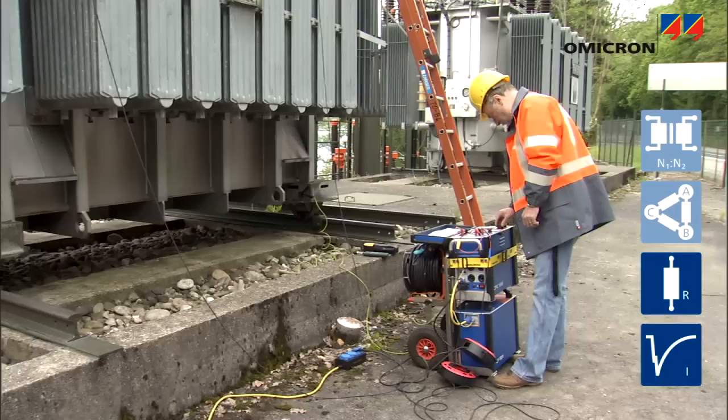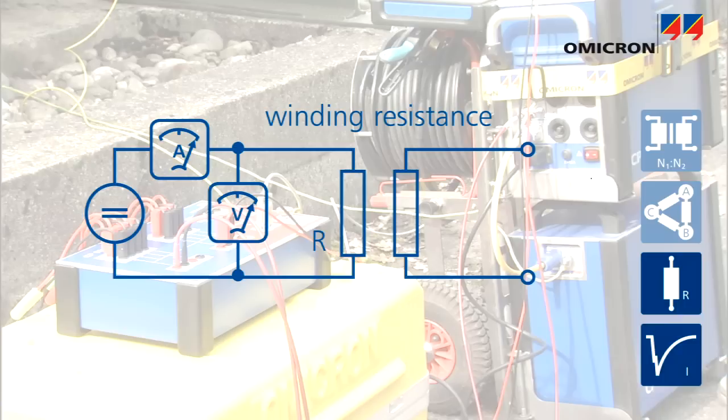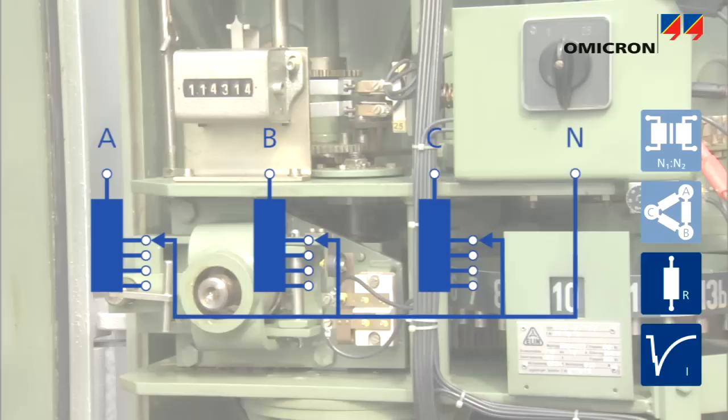Then, the CPC performs the winding resistance measurement. Injecting DC current requires the inductive energy in the winding to be charged and discharged. Thus, this measurement needs to be performed phase by phase.